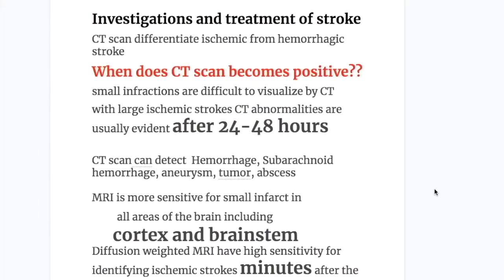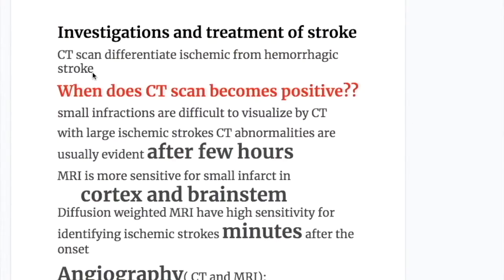MRI is more sensitive for small infarcts in all areas of the brain, including the cortex and brain stem. Diffusion-weighted MRI has high sensitivity for identifying ischemic stroke within minutes after the onset.